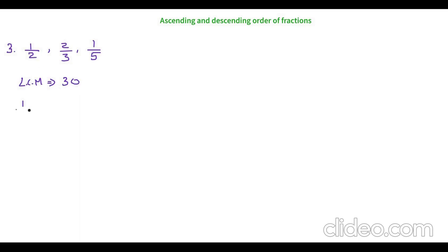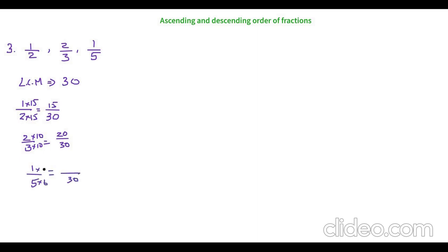Now let's make all these into like fractions. For 1 by 2, we multiply by 15 to get 15 by 30. For 2 by 3, we multiply by 10 to get 20 by 30. And for 1 by 5, we multiply by 6 to get 6 by 30. Now all of them have become like fractions. The ascending order is: 6 by 30 is less than 15 by 30, which is less than 20 by 30.